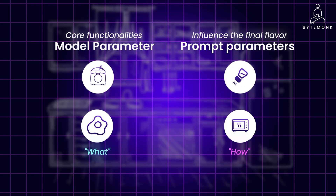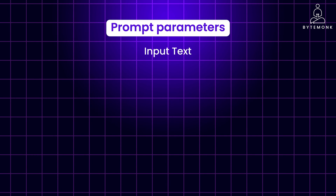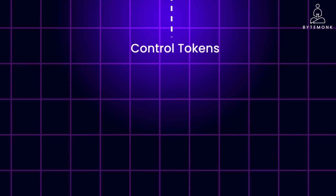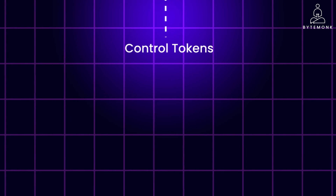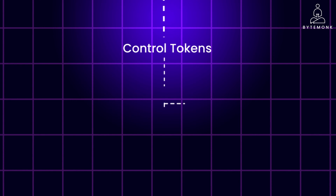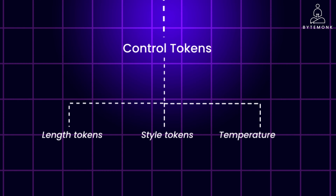Prompt parameters are elements that are part of the input given to the LLM. They can be broken down into the following categories. Input text is the core text provided to the LLM, which forms the basis for its response — it can be a sentence, paragraph, or even a complete document. Control tokens are special markers or keywords embedded within the prompt that instruct the LLM on specific aspects of its response. Examples include length tokens, style tokens, and temperature tokens. Length tokens specify the desired length of the output — for example, 'generate a 5-sentence summary.'